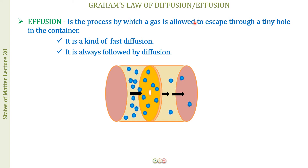Effusion is the process by which a gas is allowed to escape through a tiny hole in a container. We have a container with a separating disk containing a tiny hole. Gas is introduced on one side, and the other side is empty. After some time, gas molecules start escaping from one side through the tiny hole and moving to the other side — this escape is called effusion.